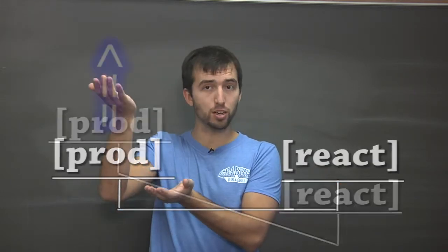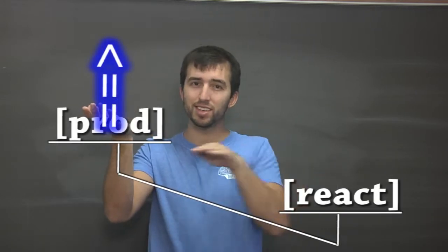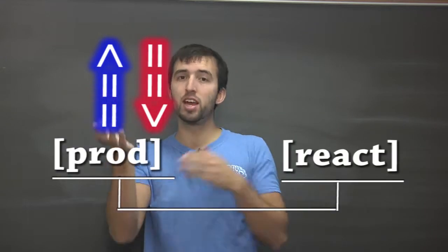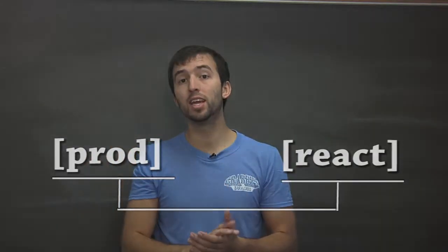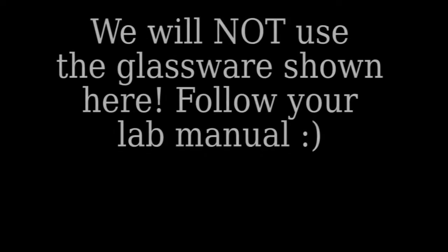If we have this side increase, and we can't adjust this side, this side must decrease in order for the balance to stay in equilibrium. Obviously, you won't be doing your titration in these cylinders, but I just wanted to have a close-up so that you could see what would happen.